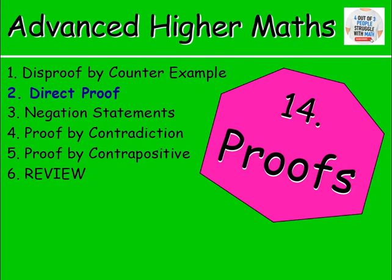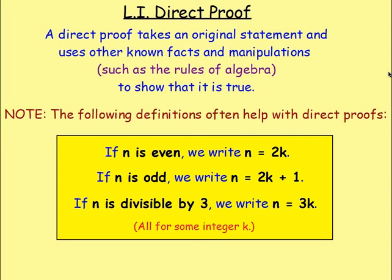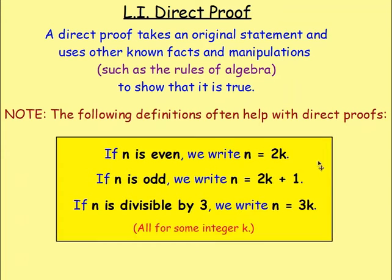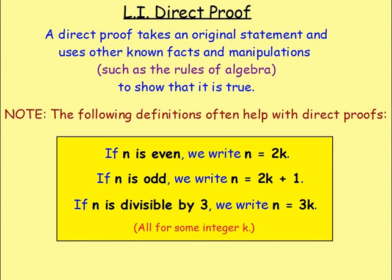We then went on to look at direct proof. Direct proof takes an original statement and uses known facts or manipulations — such as the rules of algebra — to show that it is true. A lot of the time you'll deal with odd or even numbers. If n is even, it's always 2 times something, so you write n = 2k for some integer k. If n is odd, you let n = 2k ± 1. And if n is divisible by 3, you write n = 3k. These representations come in handy for direct proofs and other proofs as well.